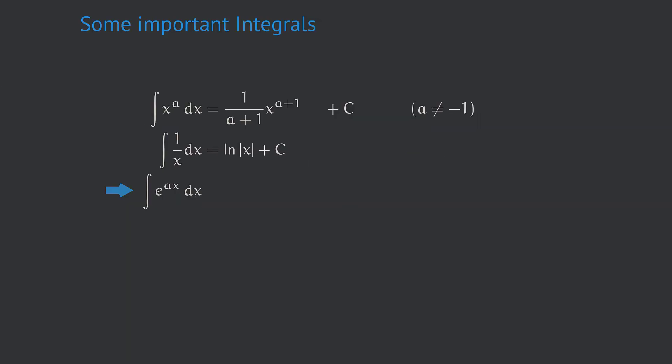Next we ask: what is the indefinite integral of e to the power of (a times x)? For the special case that a equals 1, the function is e to the power of x and its antiderivative is also e to the power of x. However, if a is different from 1, we have to take care of a by putting the factor 1 over a in front. We can easily verify this by differentiating. And again, a must not be equal to 0.